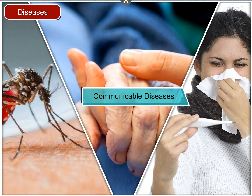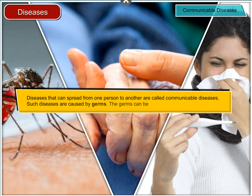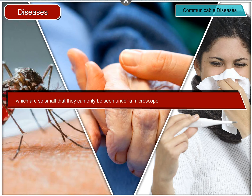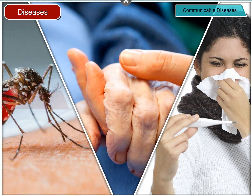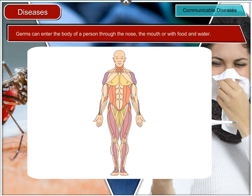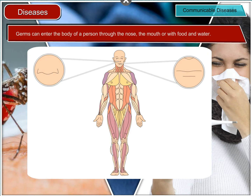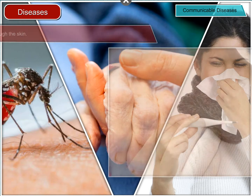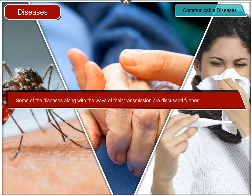Communicable Diseases: Diseases that can spread from one person to another are called communicable diseases. Such diseases are caused by germs. The germs can be bacteria, virus, or protozoa, which are so small that they can only be seen under a microscope. Germs can enter the body of a person through the nose, the mouth, or with food and water. They can also enter the body through the skin.